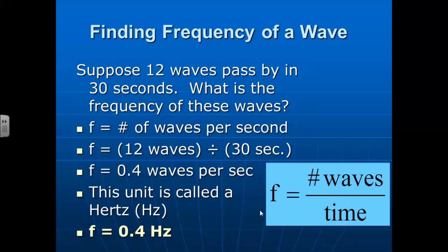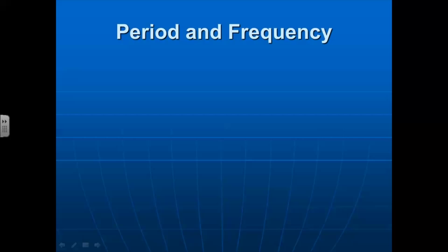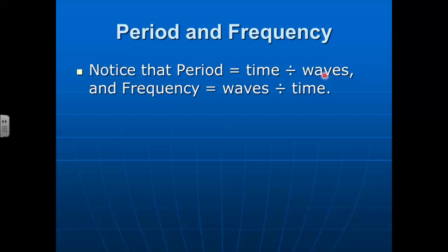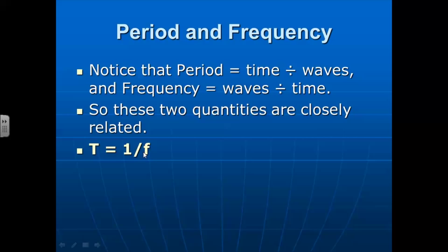Period and frequency, you'll notice that there's this interesting relationship where the period is time divided by waves, and for frequency, it's just the opposite, waves divided by time. This means that they're inversely related. That means period is equal to 1 over frequency, and vice versa. Frequency is 1 over period.